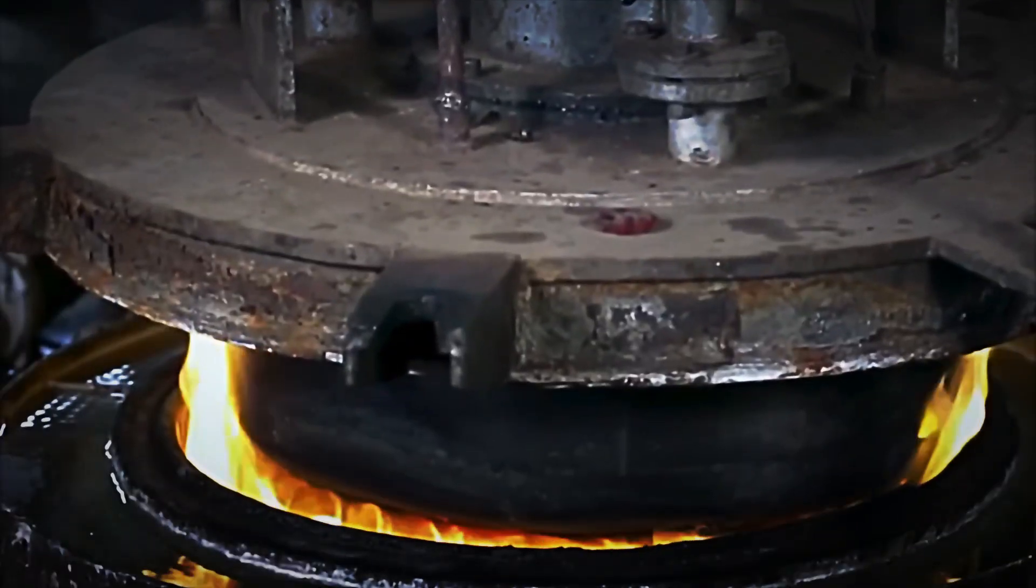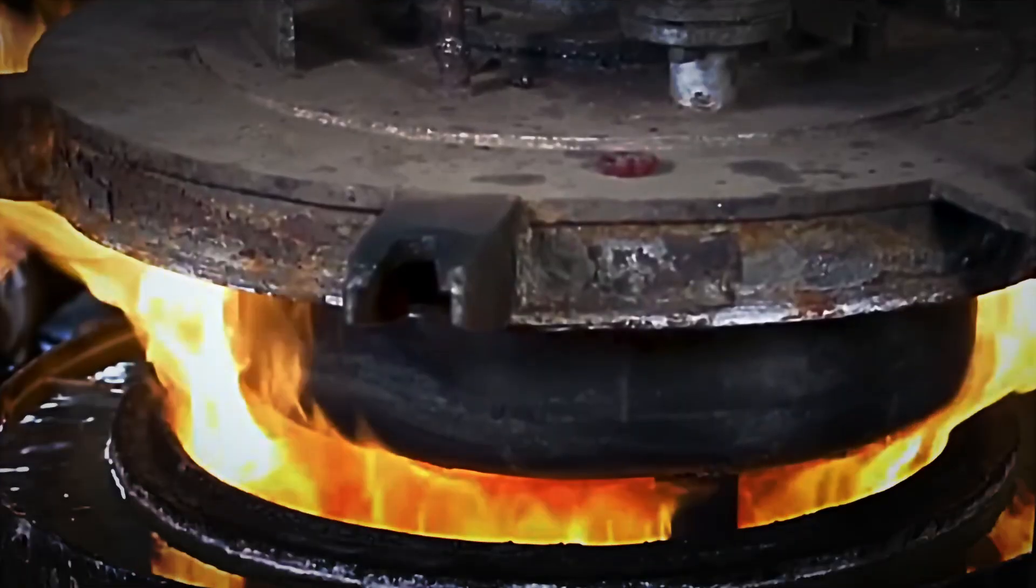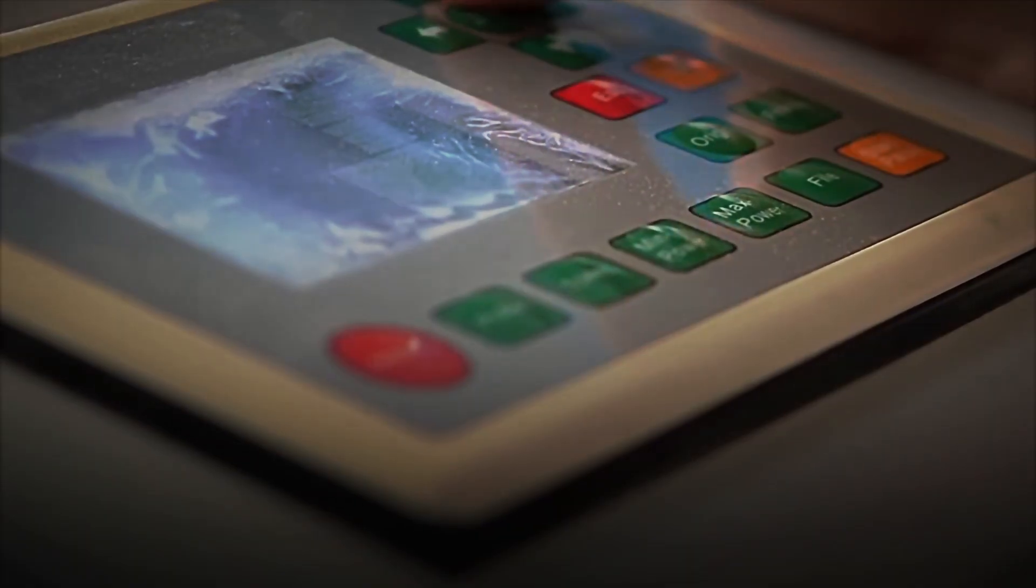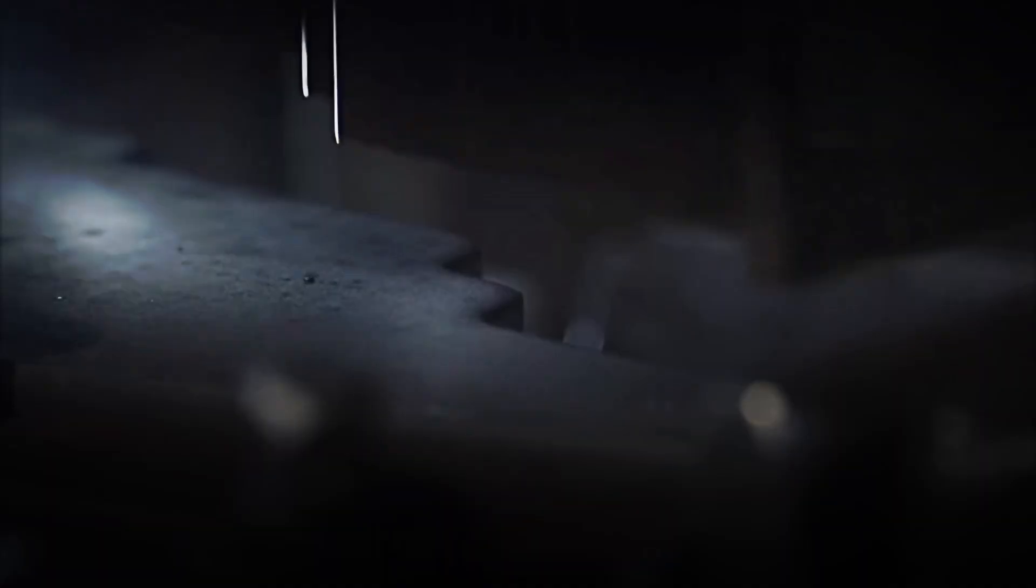With the microstructure now balanced, the pieces enter a crucial stage—fine stamping. Here, enormous presses apply precise force to shape every functional detail of the key. In a matter of seconds, the final contours of the open end are formed.